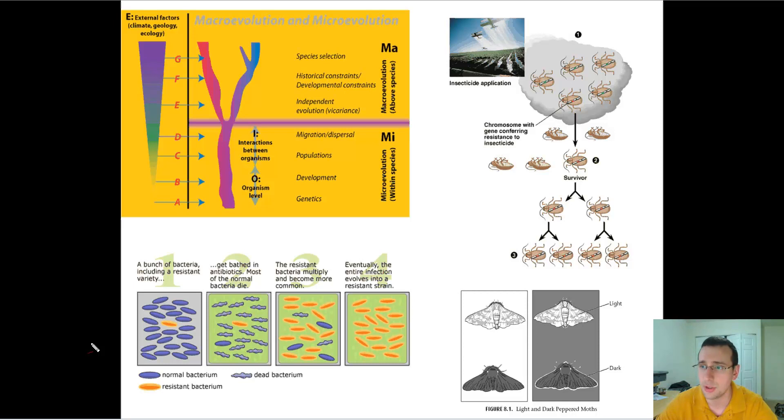Another example of microevolution is the moth which changed in Europe because of pollution. The trees used to be white, so white moths were very common and black moths were rare because they would be easily spotted by predators. But as pollution came in and the trees turned gray, black was suddenly more adaptive than white, which now would be spotted easier, and the population shifted from white to black in just a few generations.